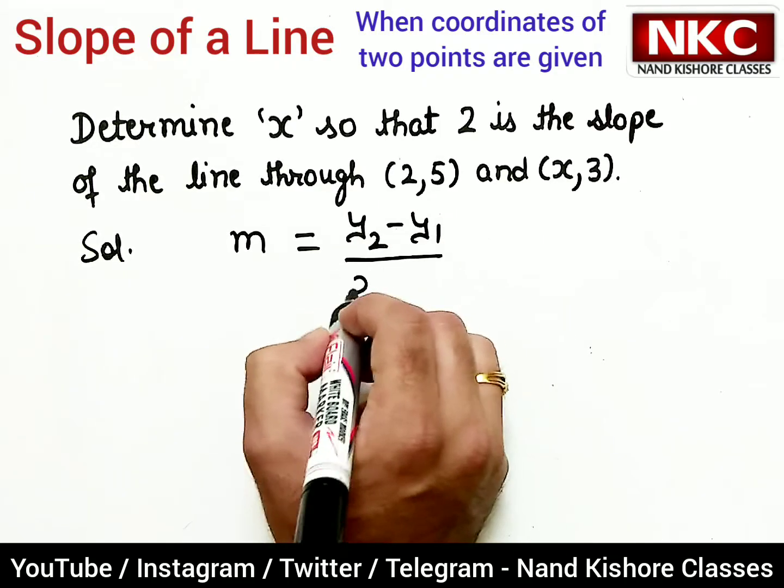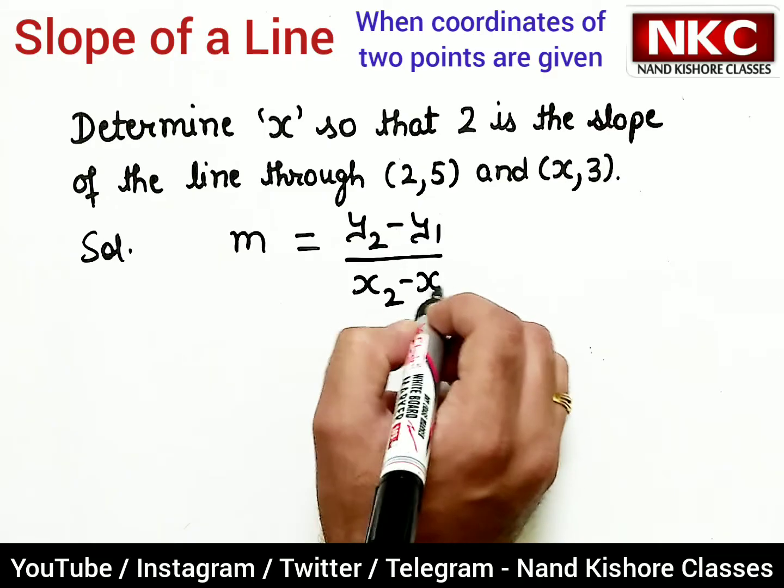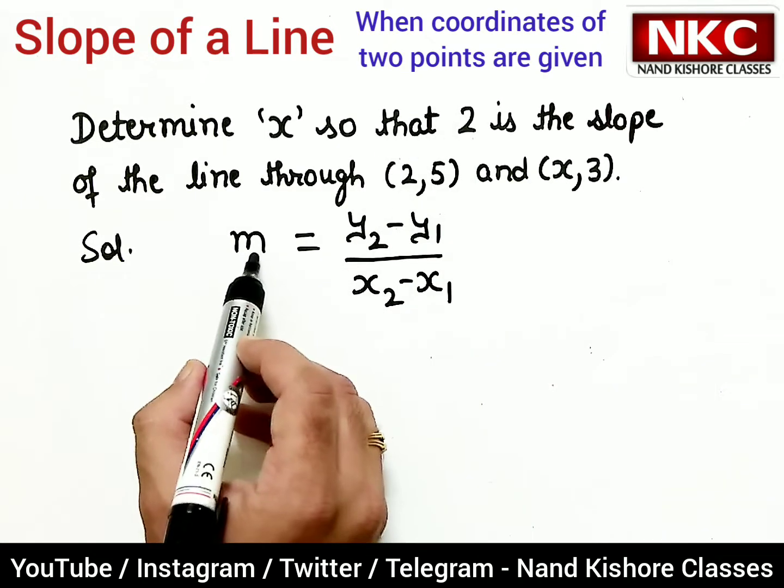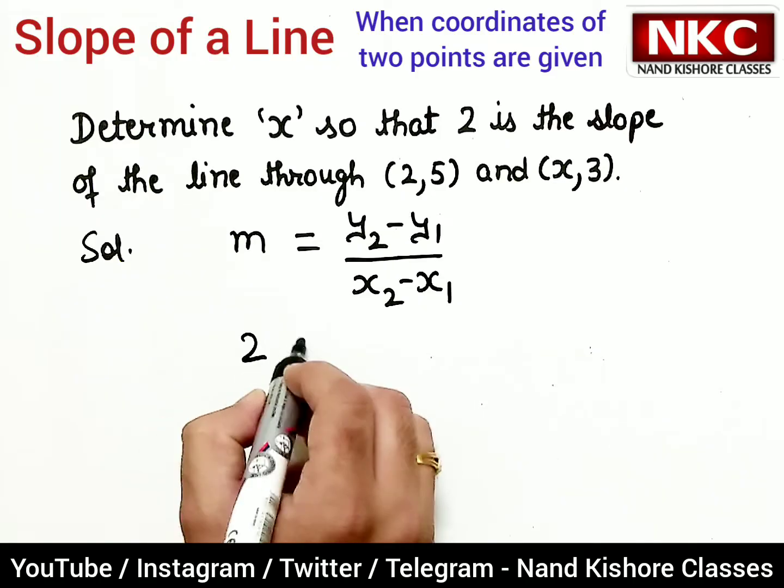Now this slope is given as 2, so I can put m as 2 here. y2 is 3, y1 is 5, x2 is x, and x1 is 2.